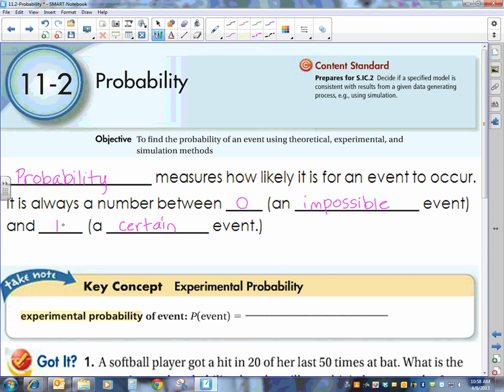Keep in mind that 1 can be written, that number between 0 and 1 can be written as a fraction, a decimal, or a percent. So 1, as a fraction or decimal, looks like 1, but as a percent is, of course, 100%.